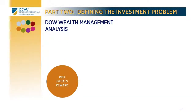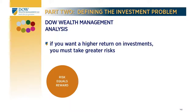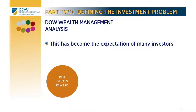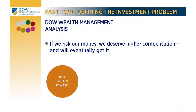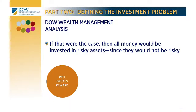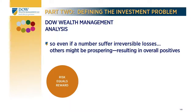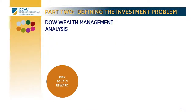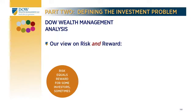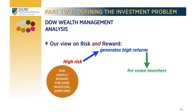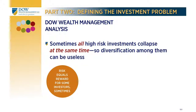Most investors can find temporary volatility acceptable; the risk of permanent loss obviously is not. You've probably heard that risk equals reward — if we want higher returns, we must take greater risk. At Dow, we consider that view to be nonsense. If that were the case, no one would put money in anything but risky investments since they would in fact not be risky. There seems to be a sentiment that risk can be adequately addressed by broad diversification — owning a large number of risky investments so that if some suffer irreversible losses, others might be prospering. Dow Wealth Management's view is that high risk generates high returns for some investors sometimes — or, to put it another way, sometimes all high-risk investments collapse at the same time so that diversification among them does no good. High risk does not guarantee high returns.